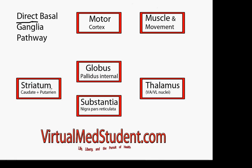So how does this whole pathway actually work? It starts off in the frontal lobes of the brain. When you decide to move, you send an excitatory stimulus — marked with a plus because it's excitatory — to the striatum via the neurotransmitter glutamate, which increases the activity of neurons in the caudate and putamen.